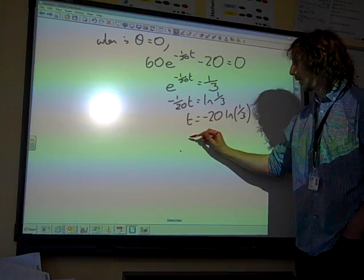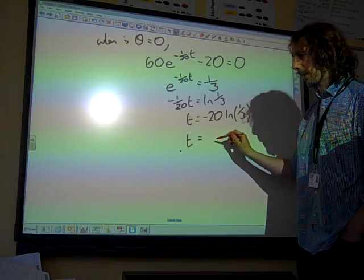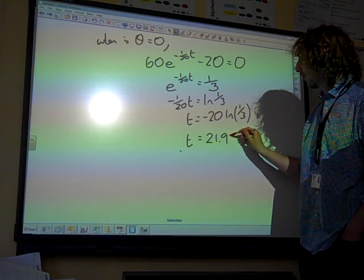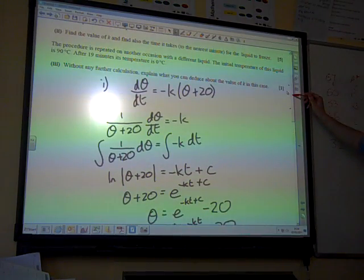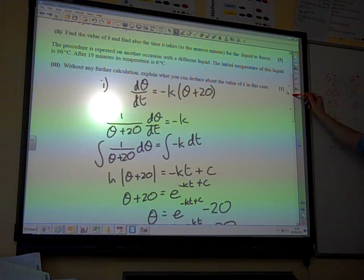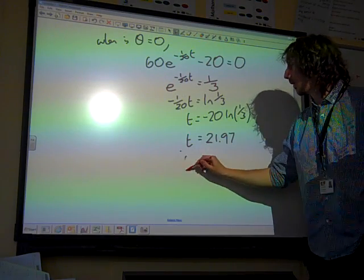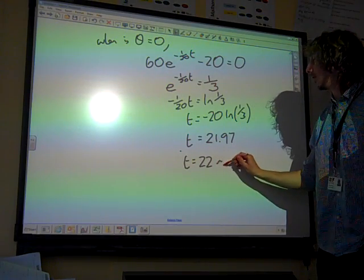Try and decode this now. -1/20 t is the natural log of 1/3. So t is -20 ln(1/3). Which gives us the value of t as being 21.97. The question did say to the nearest minute, I think. Didn't it? Find the value to the nearest minute. So therefore, t equals 22 minutes.